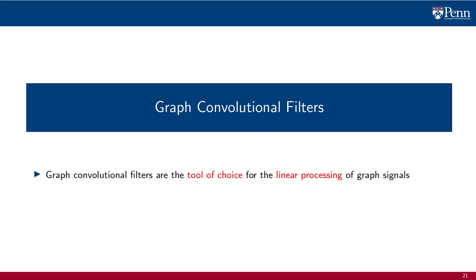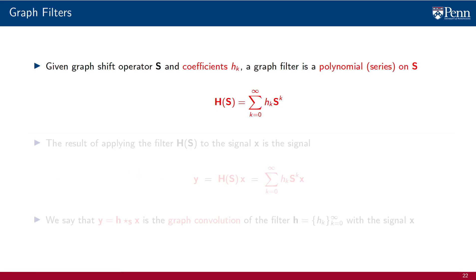Graph convolutional filters are the tool of choice for the linear processing of graph signals. Given a graph shift operator S and a possibly infinite set of coefficients h_k, a graph filter is defined as a polynomial on the shift operator with coefficients h_k, or a series if you want to be precise when the number of coefficients is infinite.